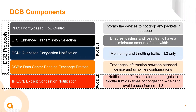Starting at the top, we have PFC or priority-based flow control — a protocol that helps inform attached devices not to drop any packets in a particular queue. Enhanced transmission selection (ETS) allows us to slice up bandwidth on links going to initiators and targets, ensuring a certain amount of bandwidth is dedicated for lossless traffic and a certain amount for lossy traffic. QCN, right in the middle, is a monitoring and throttling layer-2-only protocol that is very rarely used — it's the one protocol Aruba does not support, and it's essentially never seen deployed in the real world.